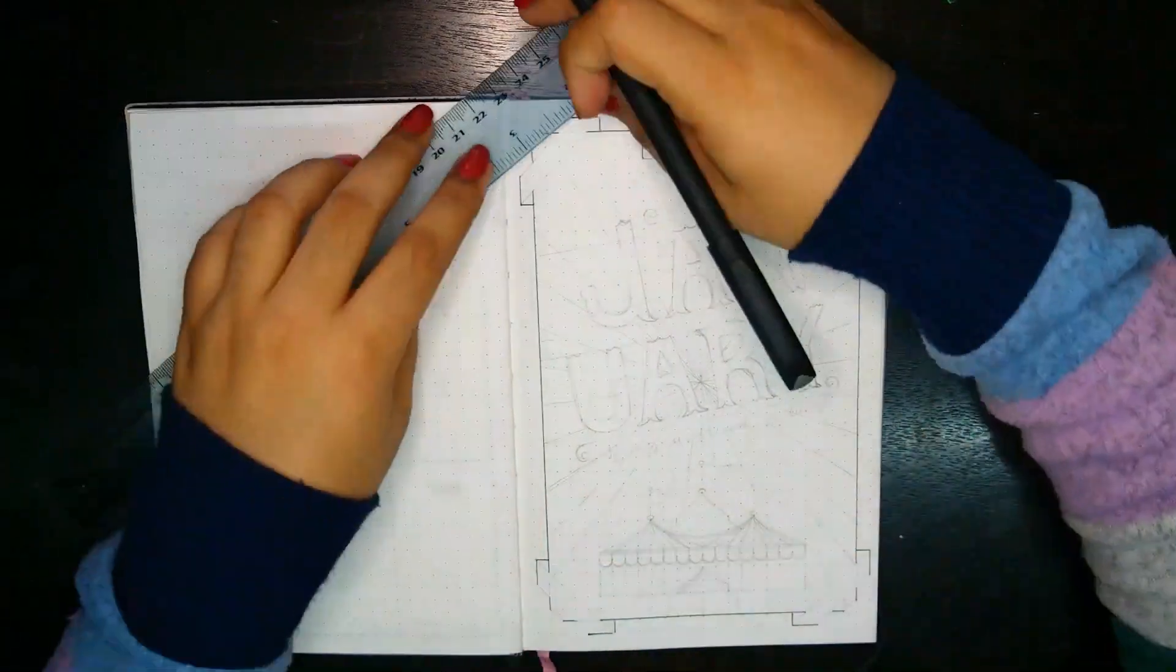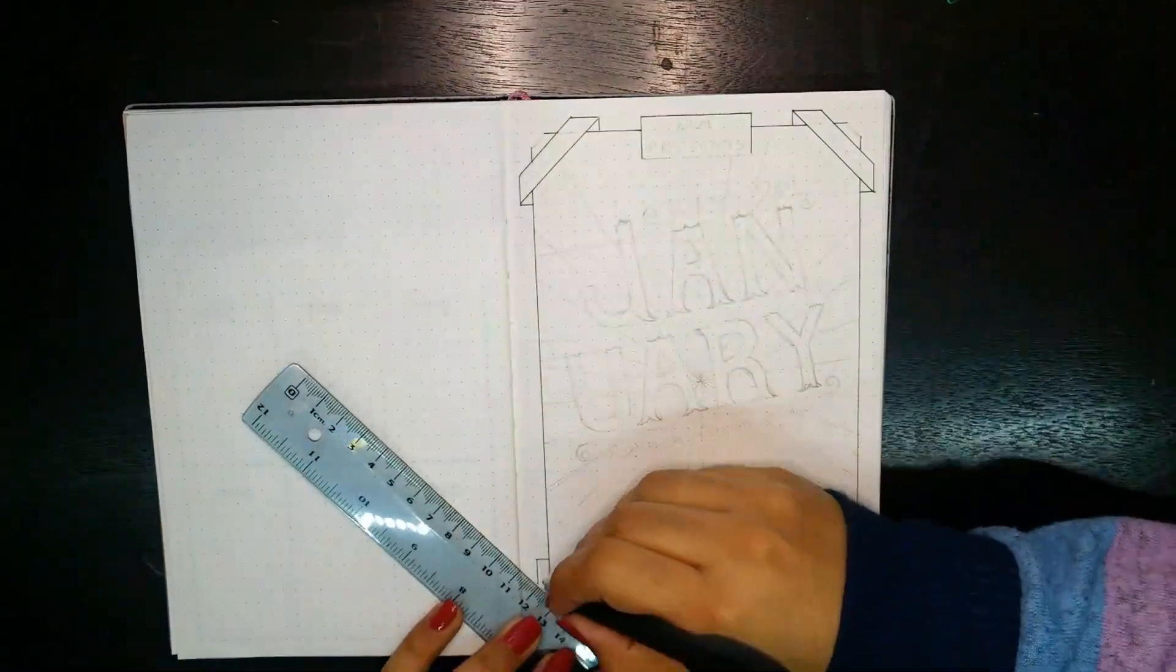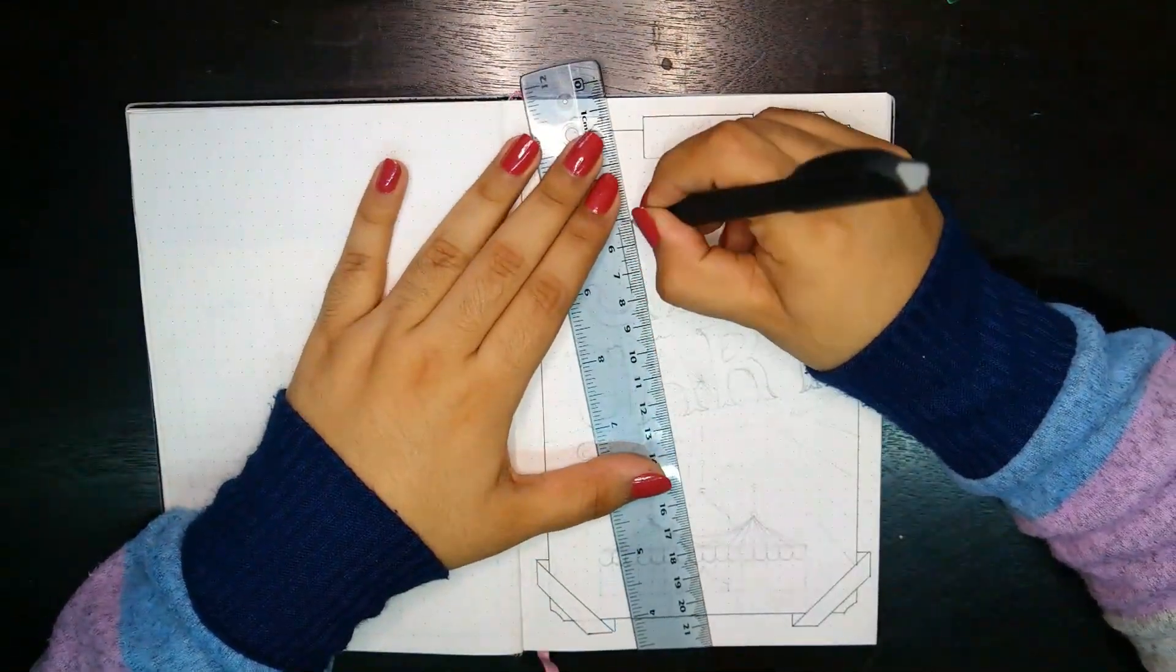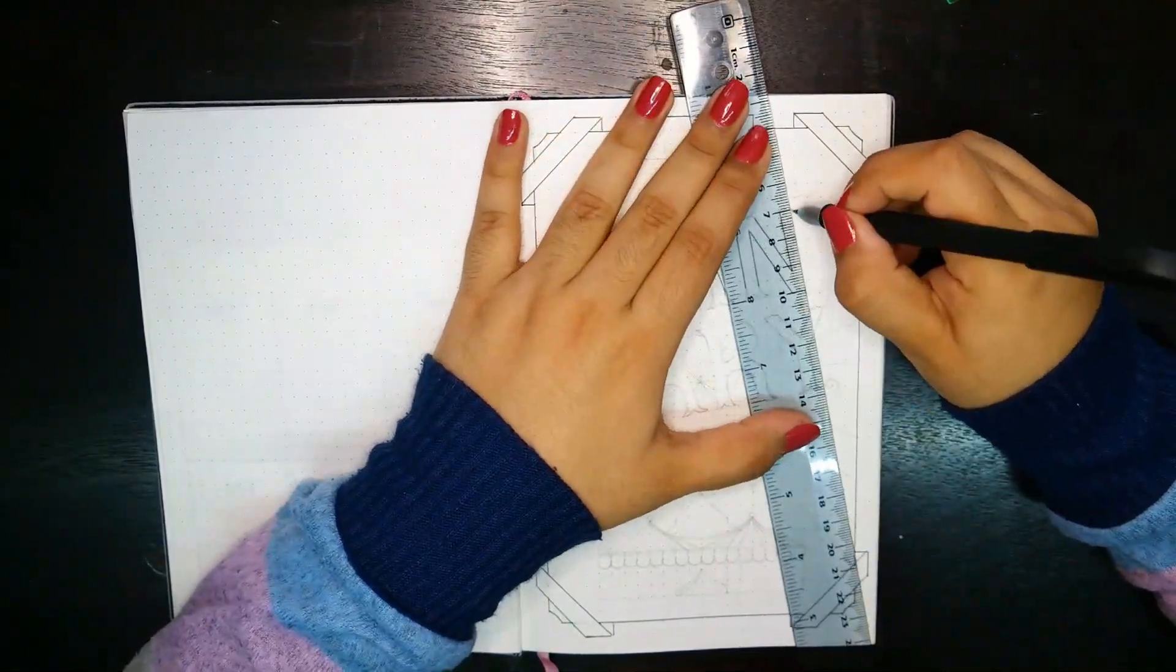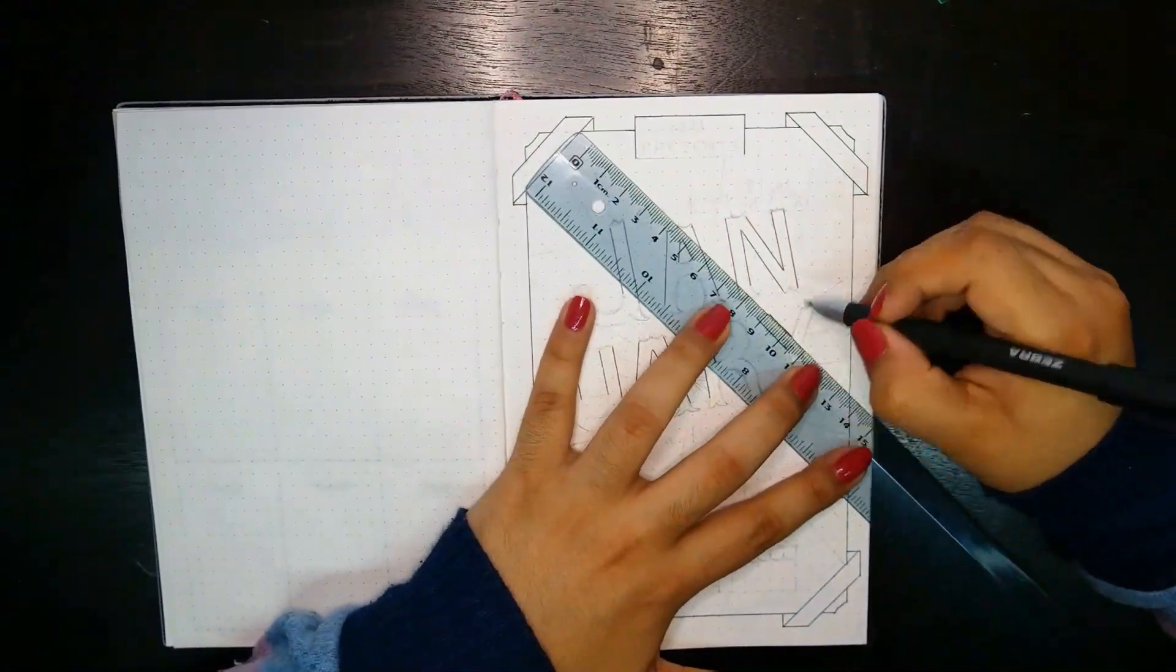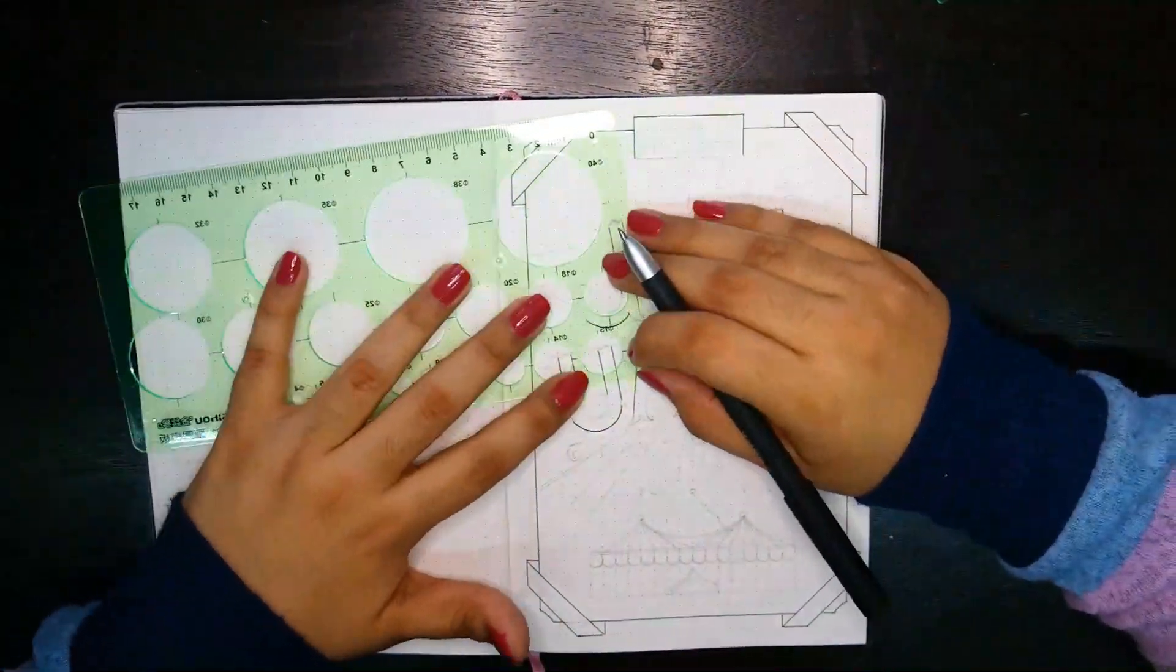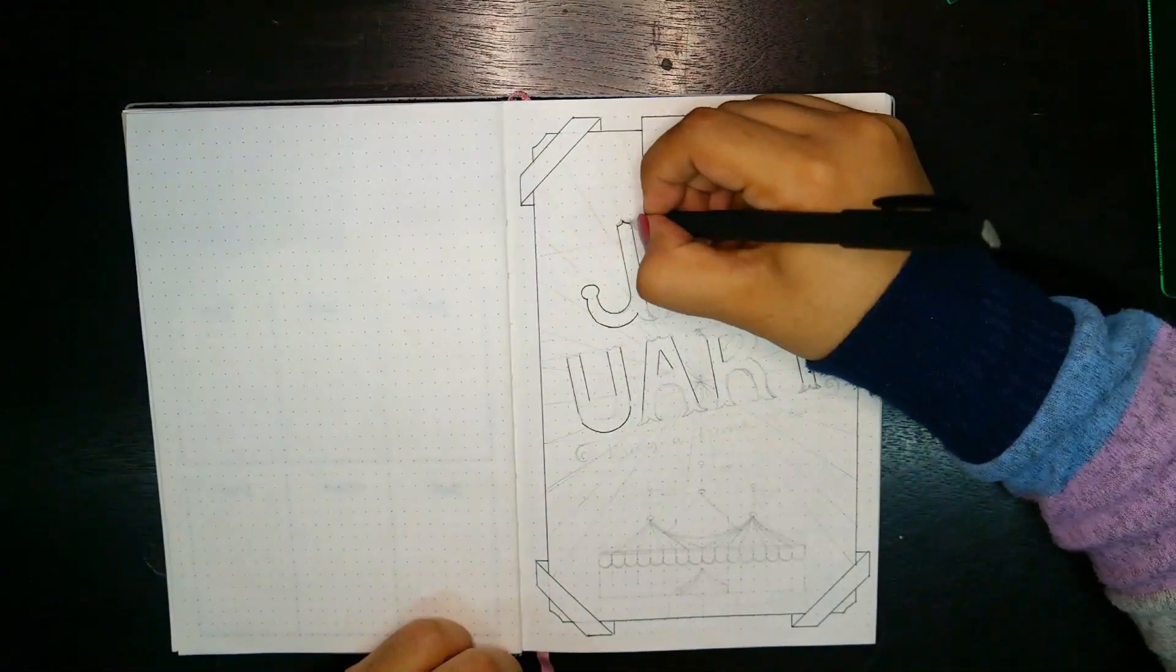We're starting right away with the cover page. The circus theme came up to me after listening to The Greatest Showman soundtrack one night. Instead of doing a theme around the movie, I found it easier to brainstorm ideas using related elements. I looked up inspiration on Pinterest.